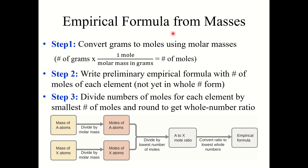Now let's talk about empirical formula from masses. When you're given masses and trying to find the empirical formula — remember, the empirical formula is the base mathematical ratio between the elements in a compound — your first step is always to convert grams to moles using molar masses. The subscripts in chemical formulas are mole ratios, not mass ratios. Step 2: write your preliminary empirical formula with the number of moles of each element as your subscripts. These are likely not yet in whole number form. Step 3: divide the number of moles for each element by the smallest number of moles and round to get a whole number ratio.